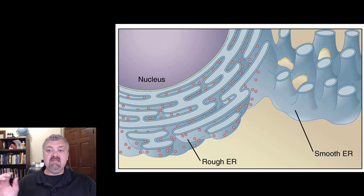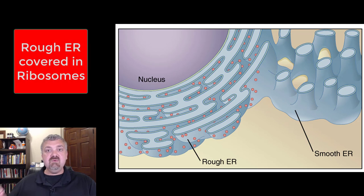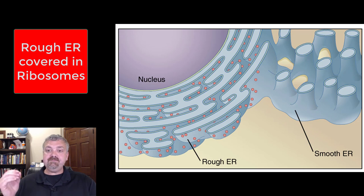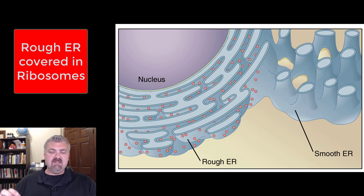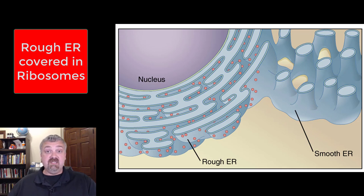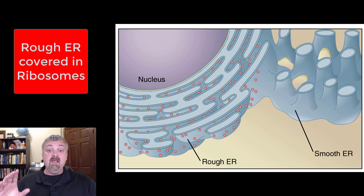Let's look at the rough and smooth ER. They're both a network of chambers. The difference is the rough ER is rough and the smooth ER is smooth, and that has to do with the ribosomes. These little spherical structures you see on the rough ER are ribosomes — they're called fixed ribosomes because they're attached right there. Notice that the rough and smooth ER are both connected; it's all one big network.